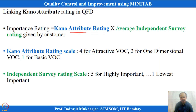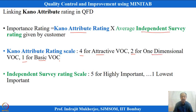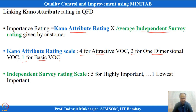Kano ratings can be multiplied with independent survey ratings. If it is a basic requirement it can be rated 1; attractive features and one-dimensional are rated higher. In QFD, we only include attractive, one-dimensional, and basic categories — these define the CTQs. Indifferent and reverse categories are not addressed in the design.